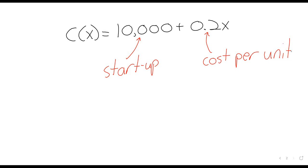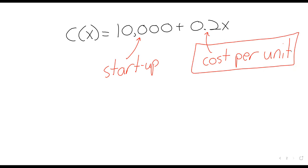This C of x risks being kind of deceptive. C of 1 is 10,000.2, and it's a literally true statement — to manufacture one unit costs $10,000.20. But it makes these units sound much more expensive to manufacture than they actually are.